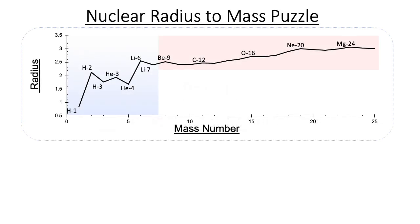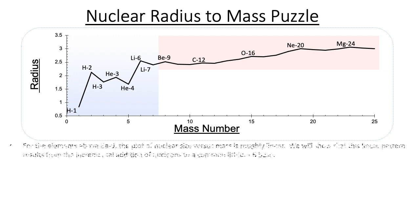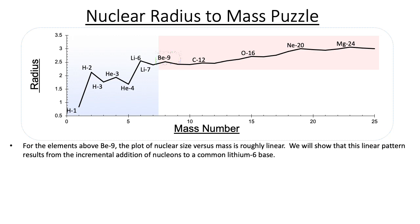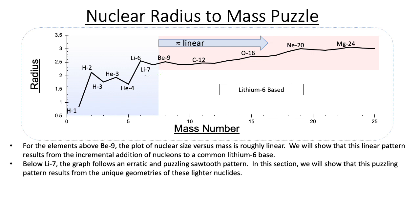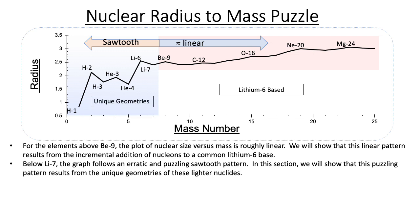The need for an alternating quark model arises from the light nuclear radius-to-mass-number puzzle. For the elements above beryllium-9, the plot of nuclear size versus mass is roughly linear. We will show that this linear pattern results from the incremental addition of nucleons to a common lithium-6 base. Below lithium-7, the graph follows an erratic and puzzling sawtooth pattern. We will show that this puzzling pattern results from the unique geometries of these lighter nuclides.